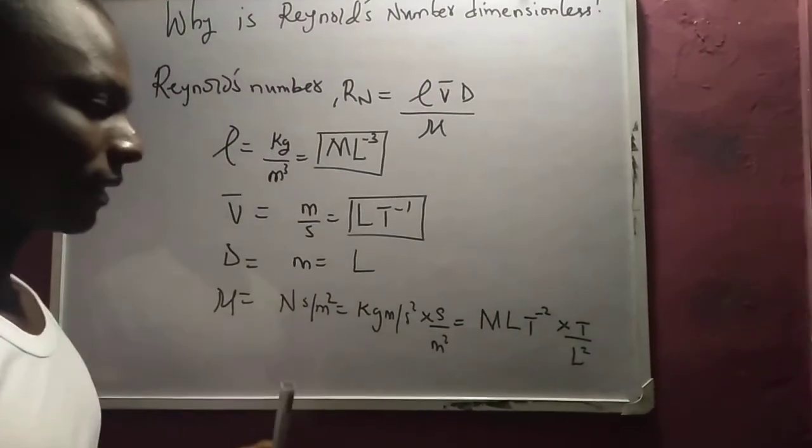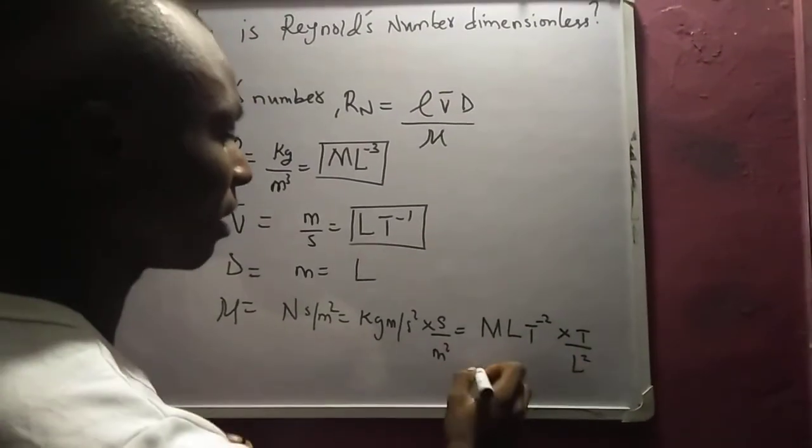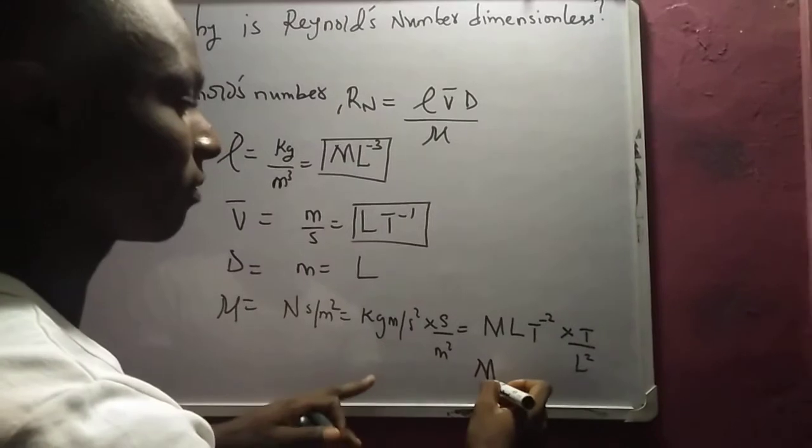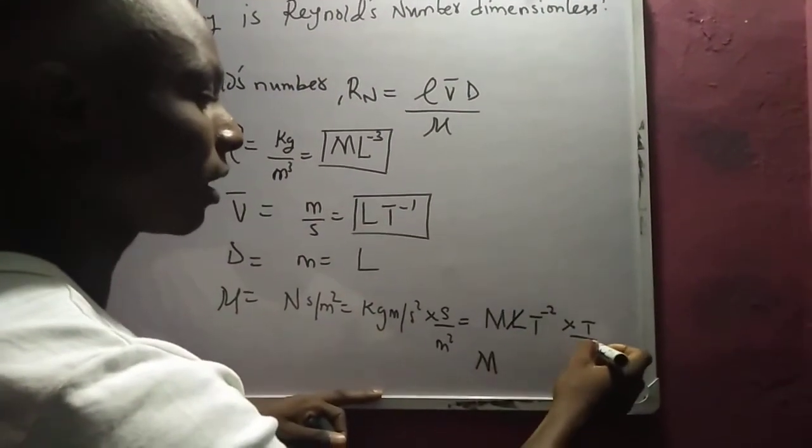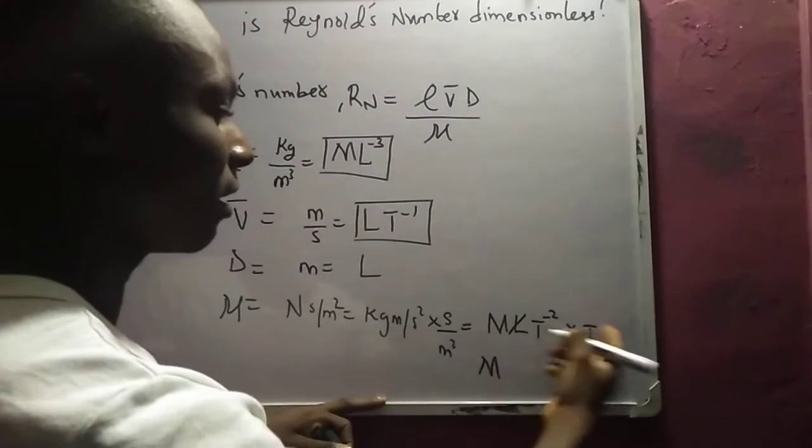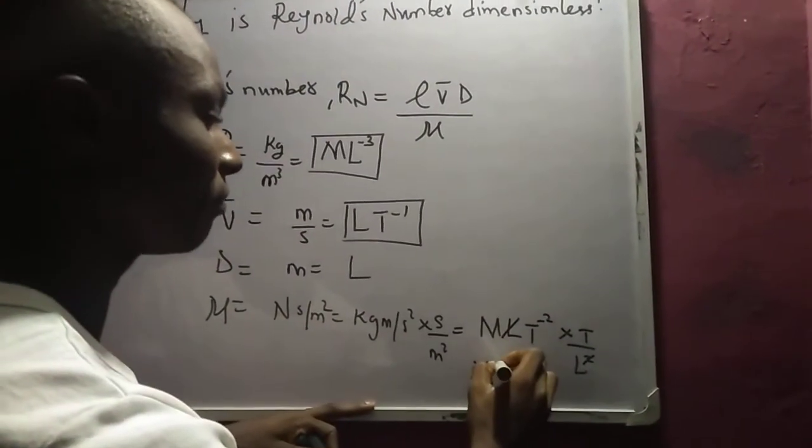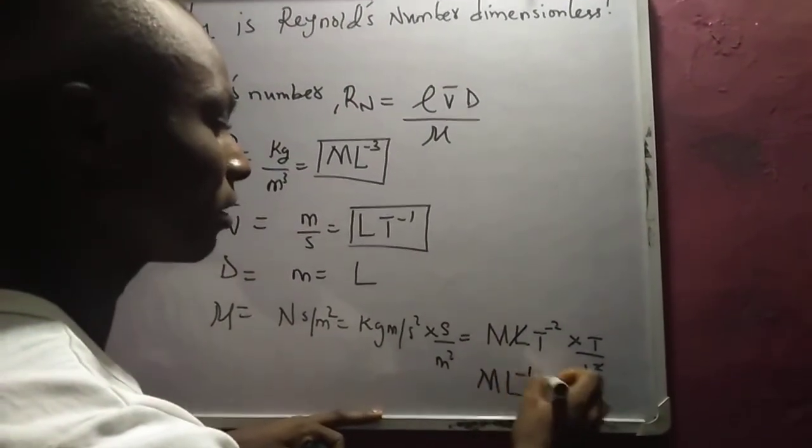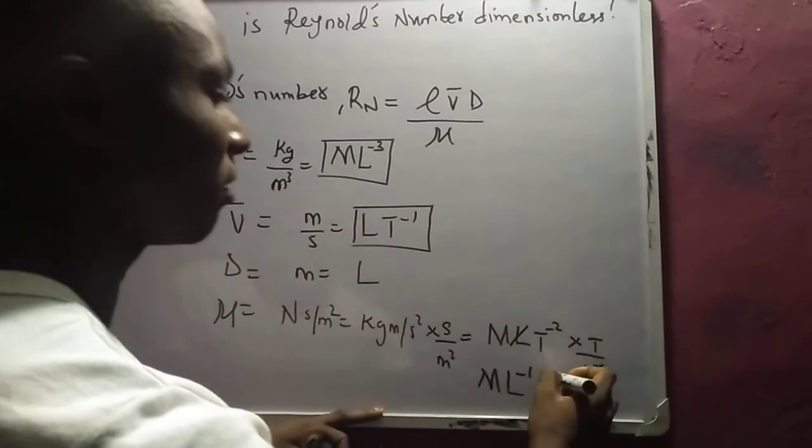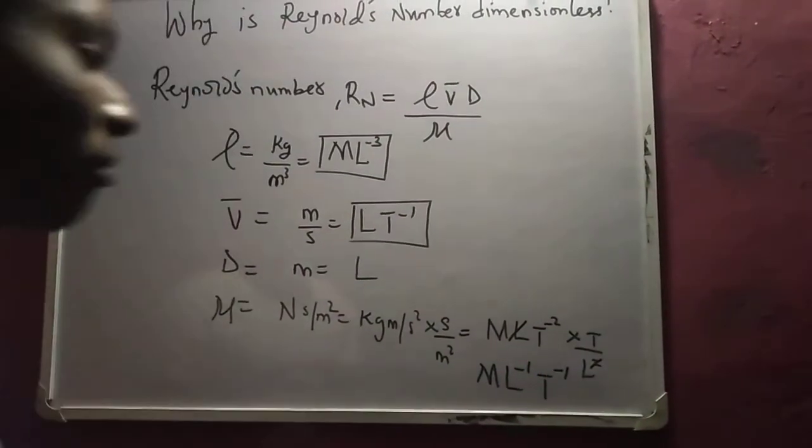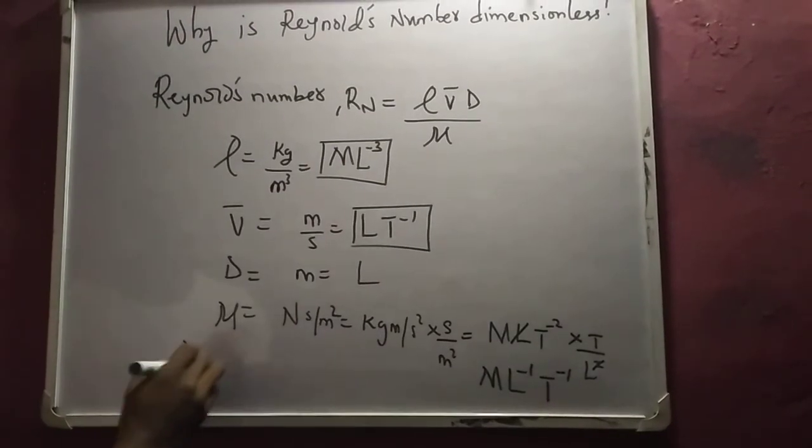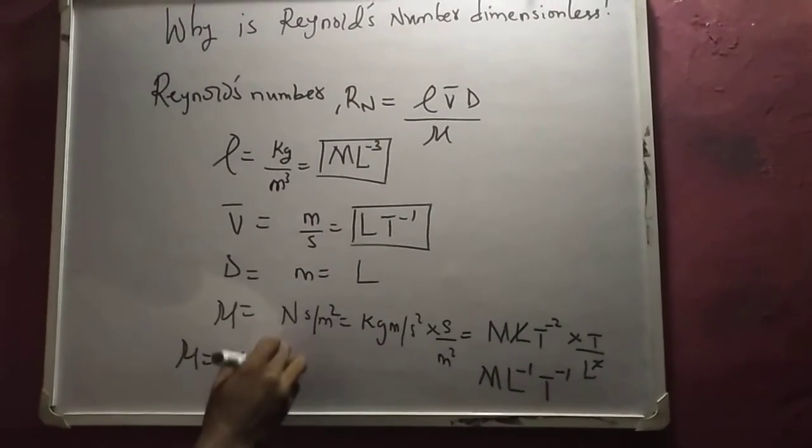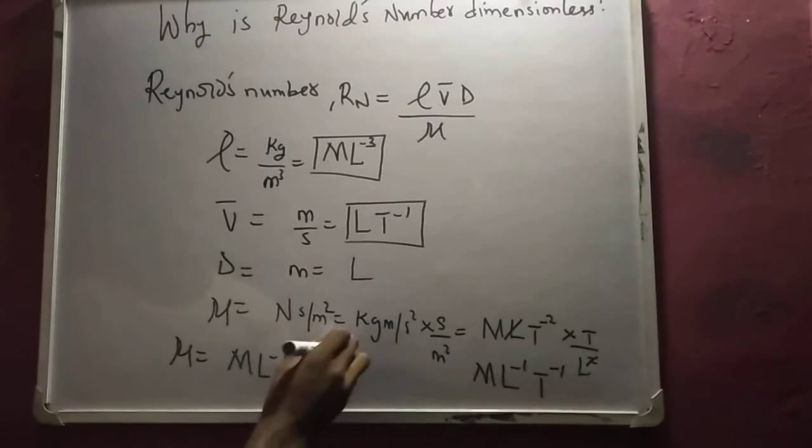Right, so we understand. Now we have mass. So this goes and this goes. So for this, you have L⁻¹T⁻¹. Right, so you have μ as ML⁻¹T⁻¹.